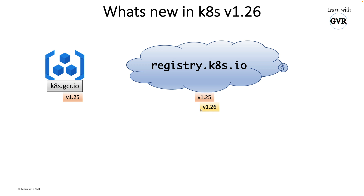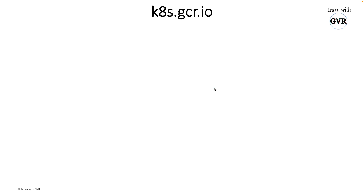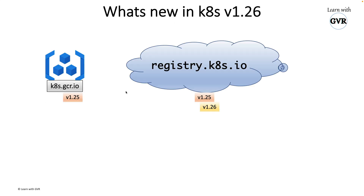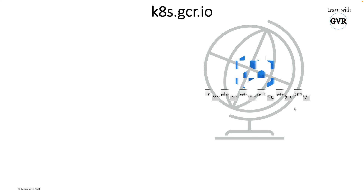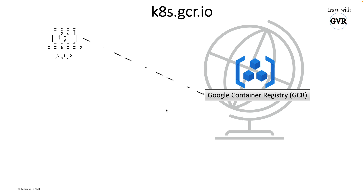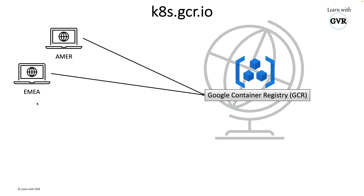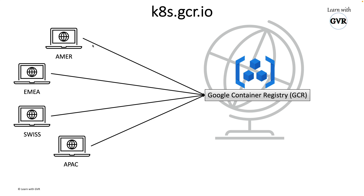To recap: the old registry k8s.gcr.io is Google Container Registry — similar to Elastic Container Registry or Azure Container Registry. It is a container registry where all Kubernetes-specific images were stored, since Kubernetes was invented by Google. Google donated their container registry for use worldwide — Americas, Europe, Switzerland, and Asia-Pacific — so all Kubernetes downloads were being pulled from Google Container Registry.